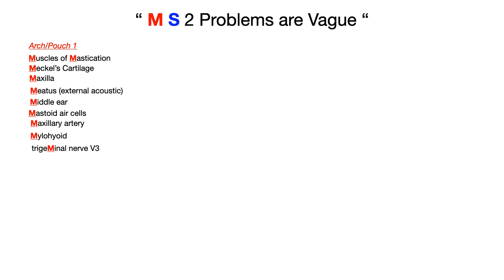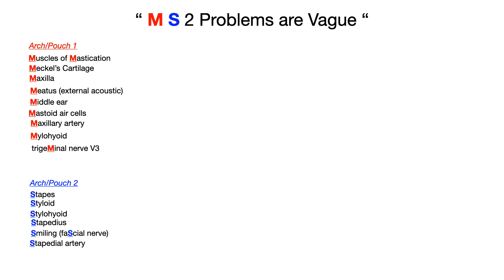The S in MS2 tells us everything that comes from arch and pouch number two — everything with the letter S. So the stapes, the styloid, the stylohyoid, the stapedius, all of the muscles controlled by the facial nerve — the nerve associated with smiling — and the artery is going to be the stapedial artery.